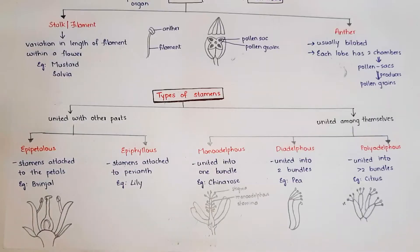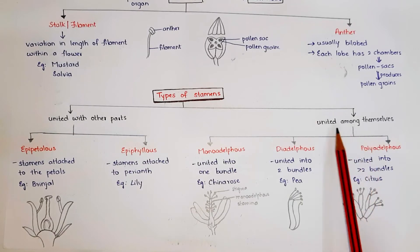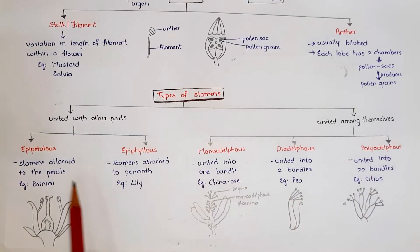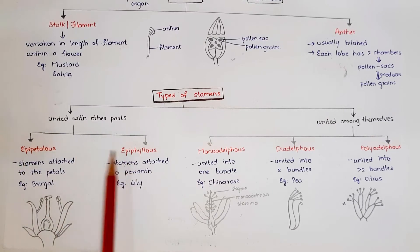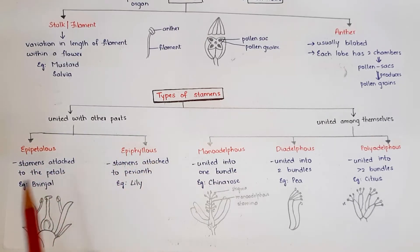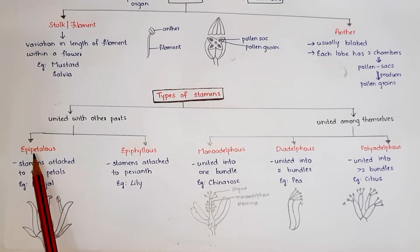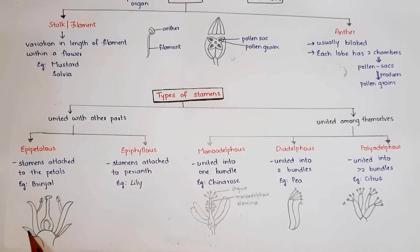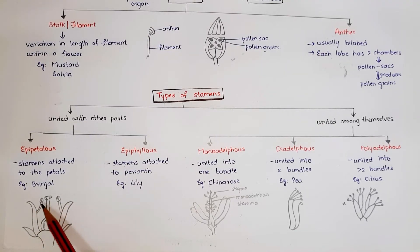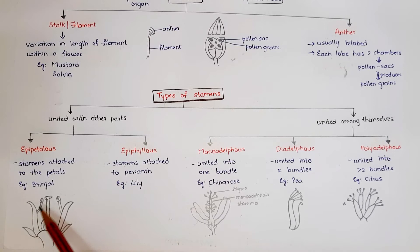Coming to types of stamens. When stamens are united with other parts, two types are present: epipetalous and epiphyllous. Epipetalous means stamens are attached to petals — example is brinjal. In the diagram, stamens are attached to corolla (petal), so it is called epipetalous. Epiphyllous means stamens are attached to perianth — perianth is where calyx and corolla are not distinguished and look alike — example is lily.